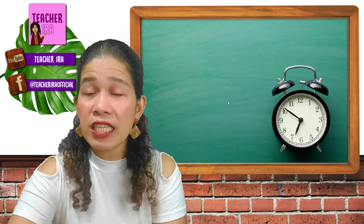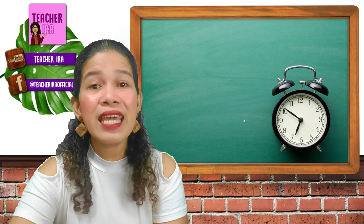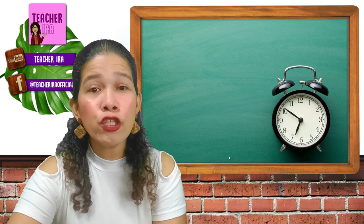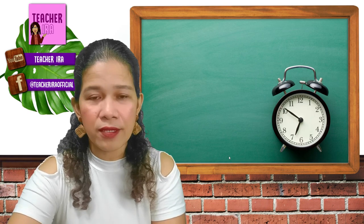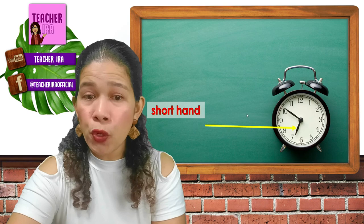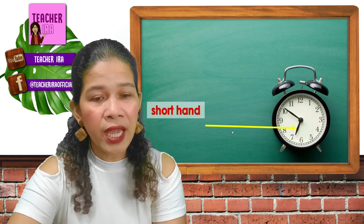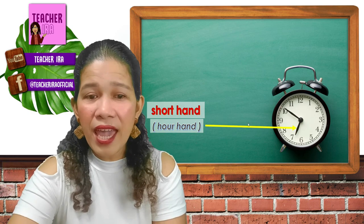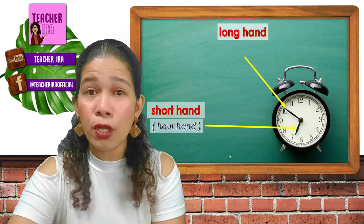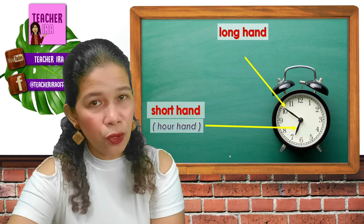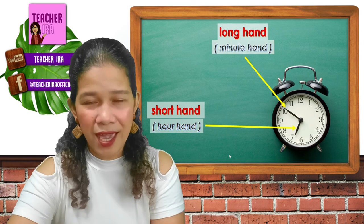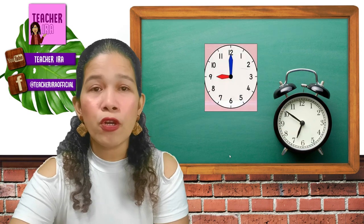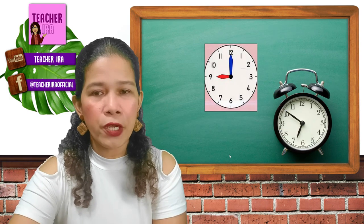Children, this is a clock in the picture and there are different parts of the clock. This is the face of the clock. It has 12 numbers and two major hands. The first hand is the short hand — this is what you call the short hand or the hour hand. The second hand is the long hand, which is also called the minute hand.